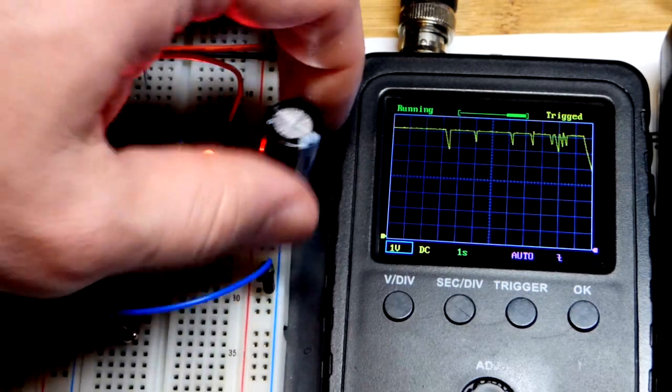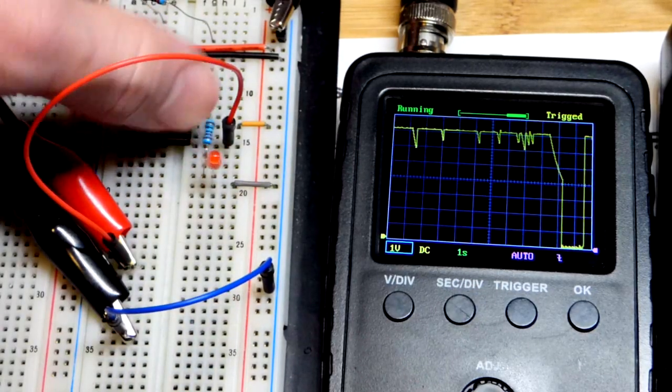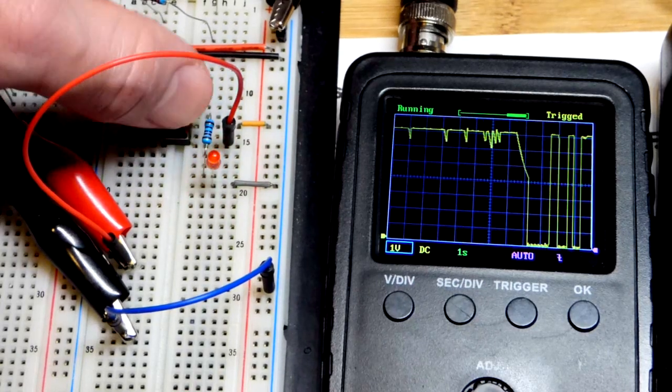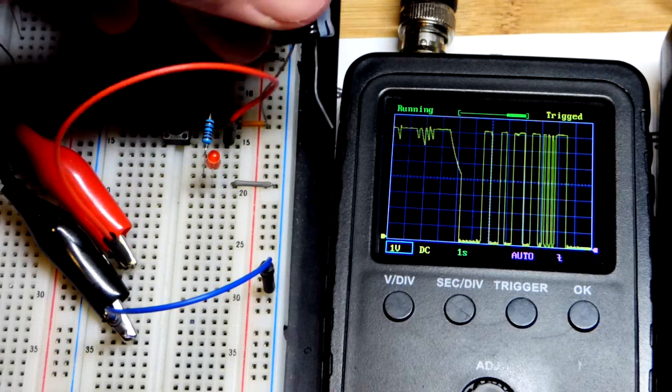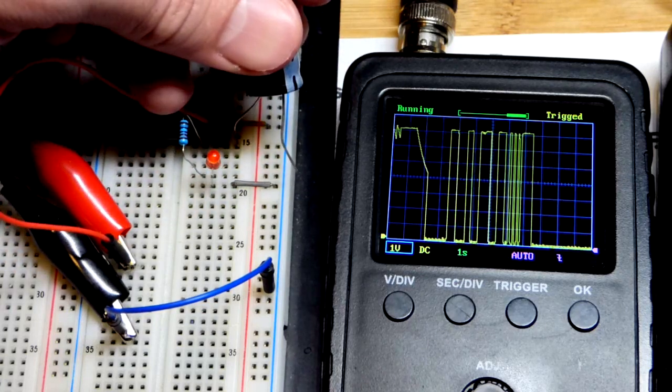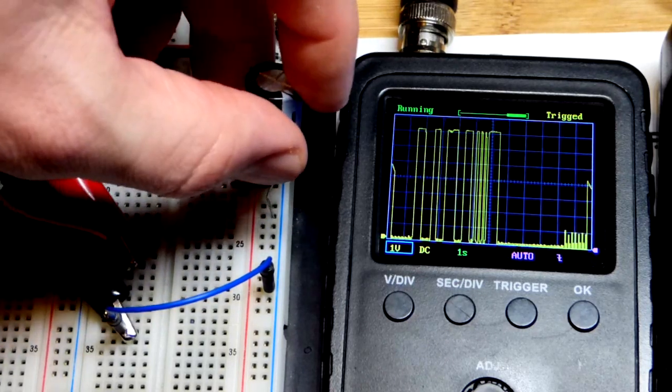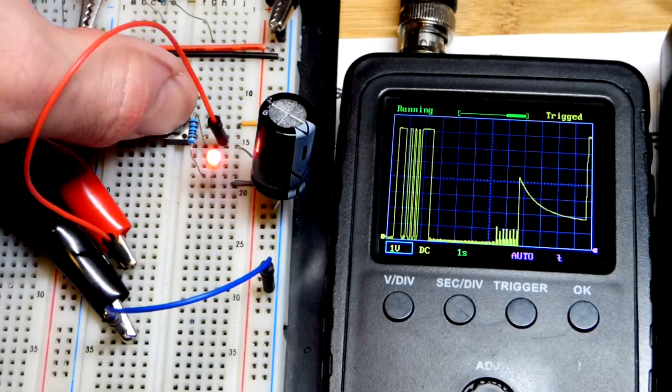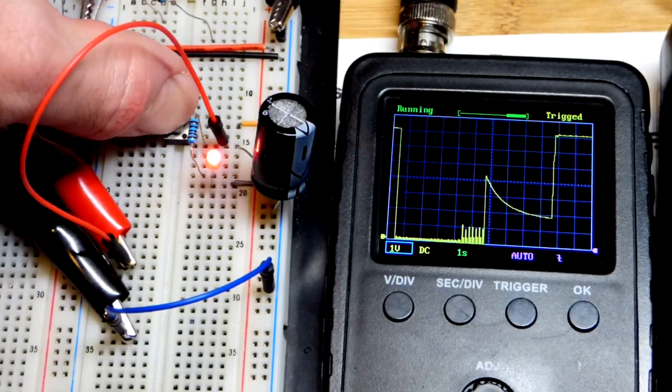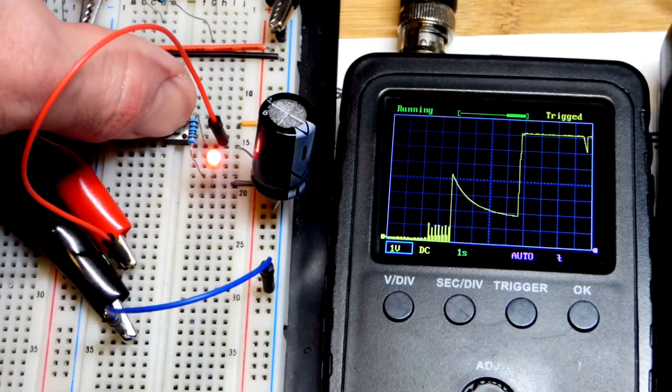Whereas without a capacitor, of course, the voltage change is sudden. So it is smoothing it down, especially when it comes to the discharge. We're not getting a sudden drop in voltage. We're not getting a sudden drop of voltage. It's taking time.